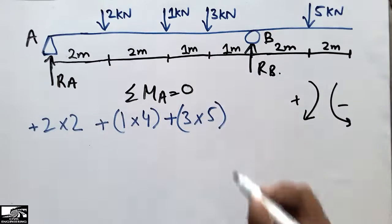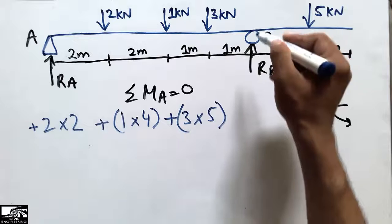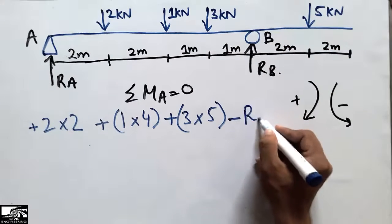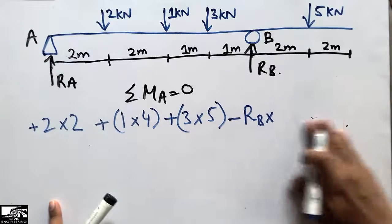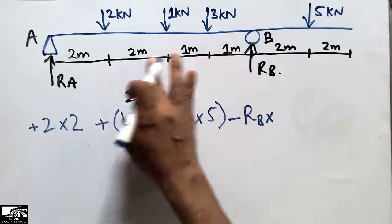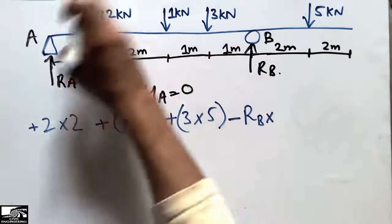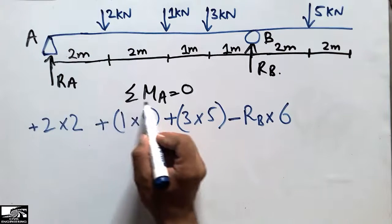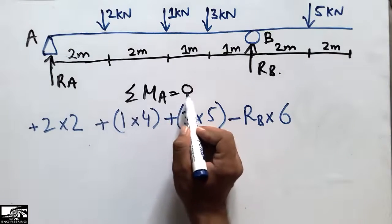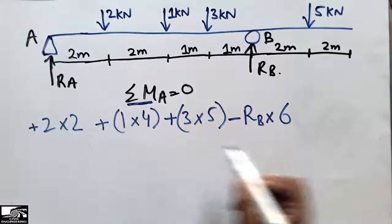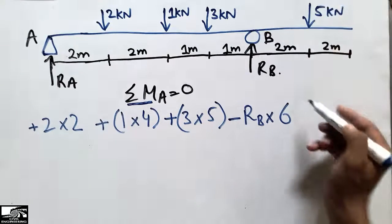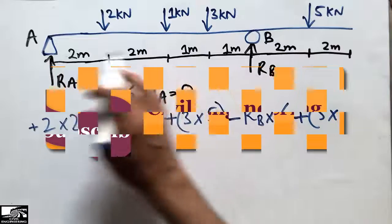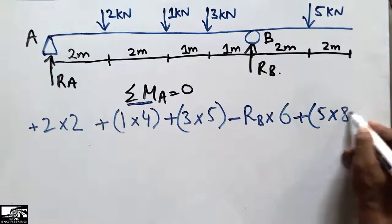RB is in the anti-clockwise direction, so it will be minus RB multiplied by its moment arm, which is 1 + 1 + 2 + 2 = 6. Then the 5 kN load is acting clockwise, so it is positive: 5 × 8 = 40, since the moment arm is 6 + 2 = 8.